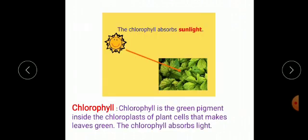Next requirement for photosynthesis is presence of chlorophyll. Chlorophyll is the green pigment inside the chloroplasts of the plant cells that make leaves green. The chlorophyll absorbs light.